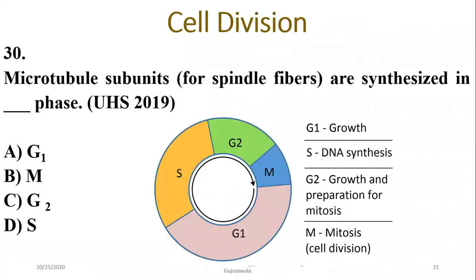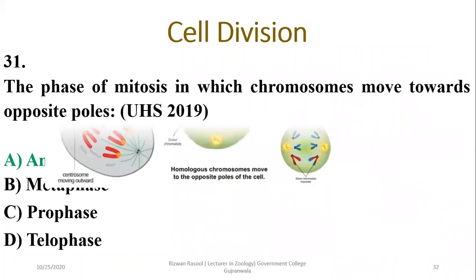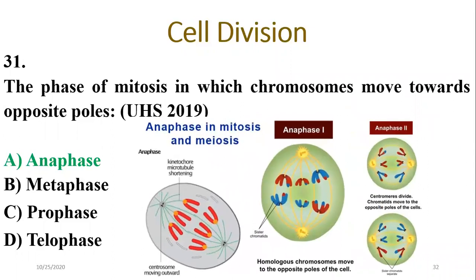Question 31: Microtubule subunits for spindles are synthesized in G2 phase — so Charlie is the right option. The phase of mitosis in which chromosomes move toward opposite poles is anaphase, whether in mitosis or meiosis — chromosomes or chromatids move toward their respective poles.